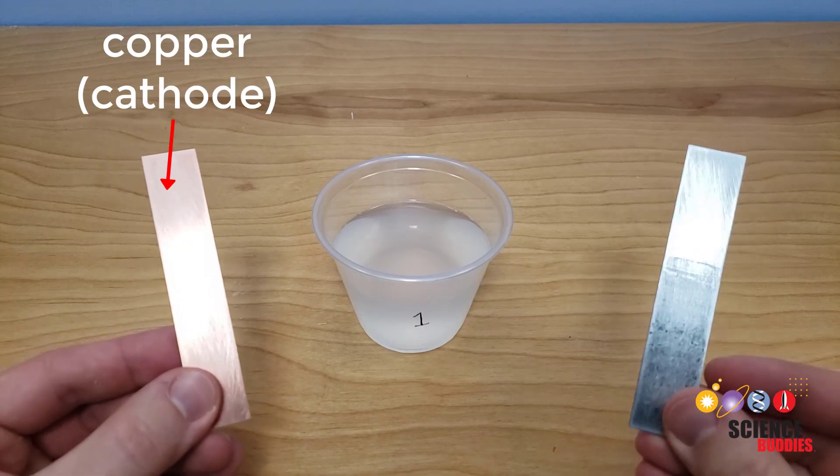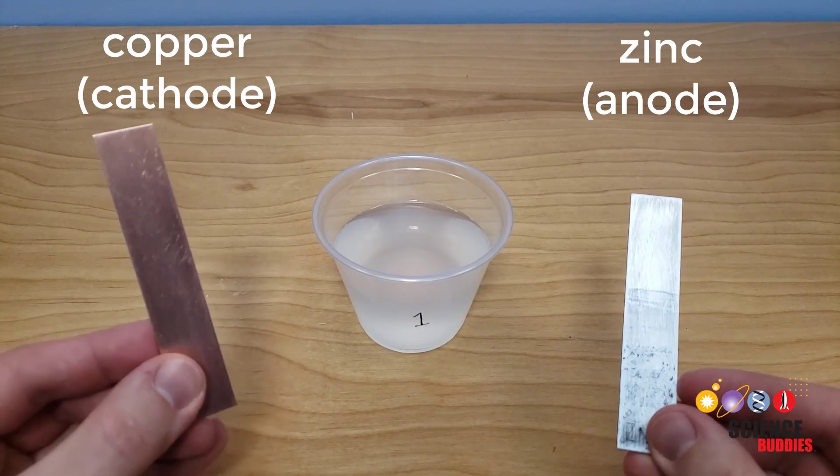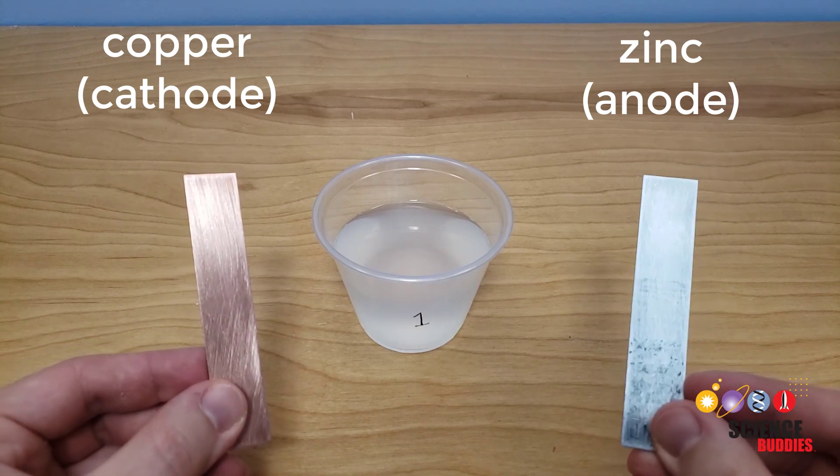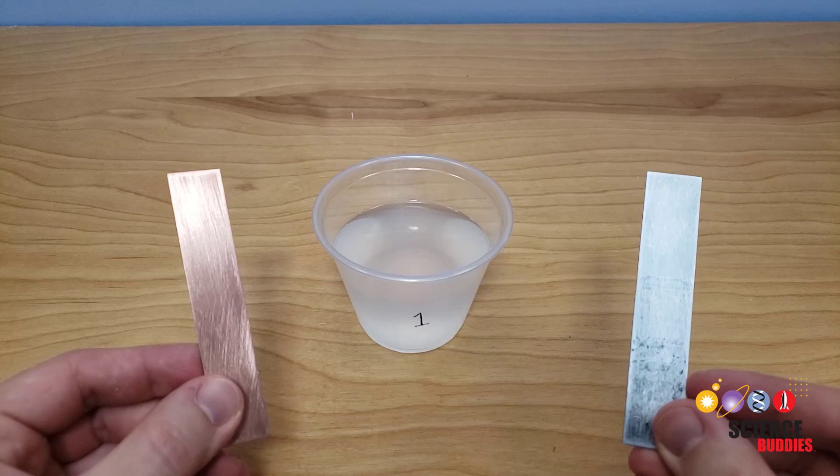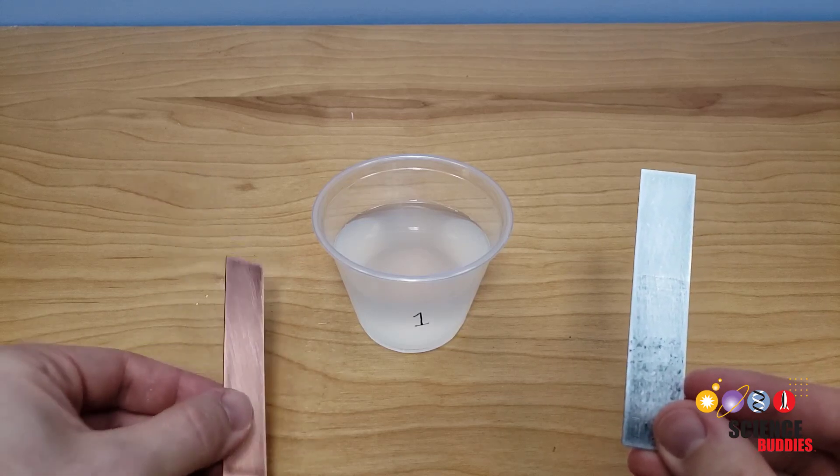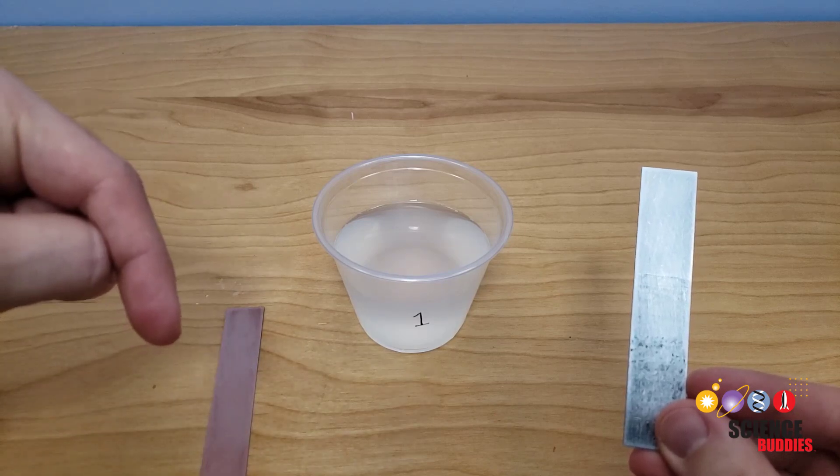Next take one copper and one zinc electrode. The copper will be your battery's cathode and the zinc will be your battery's anode. To learn more about what those terms mean and what goes on inside a battery, check out the background information in the written instructions for the project which are linked in the video description.